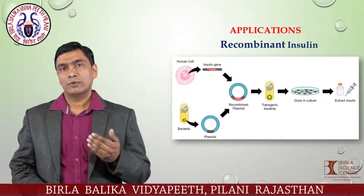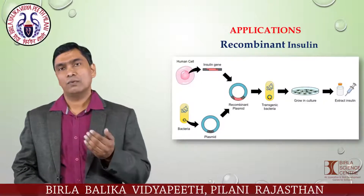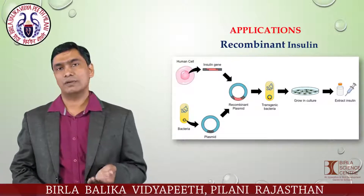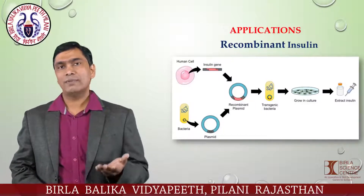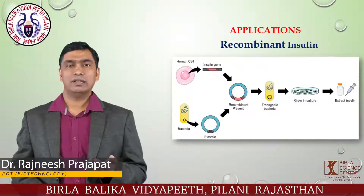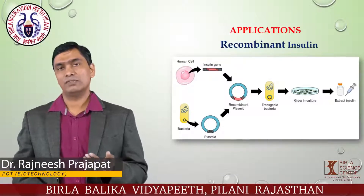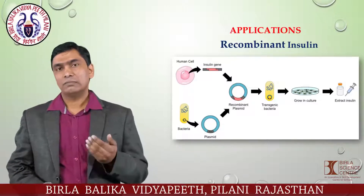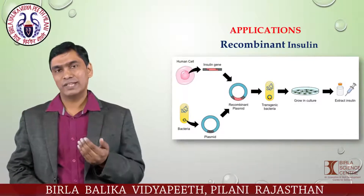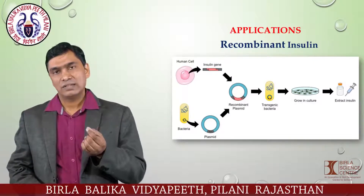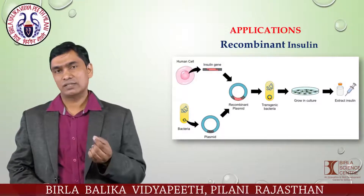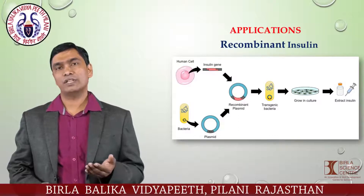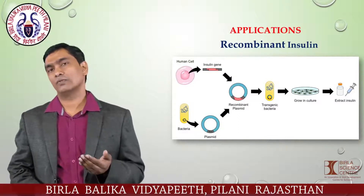One broad application discussed in this chapter is the production of recombinant insulin. Insulin basically regulates glucose concentration in the blood, but in diabetic patients insulin is not released in proper concentration, causing excess glucose to be released in the urine. By using the basic steps of genetic engineering and rDNA technology, the insulin gene has been inserted into a bacterial system to produce artificial insulin. The brand name of this artificial insulin is Humulin, and it is very useful for diabetic patients.